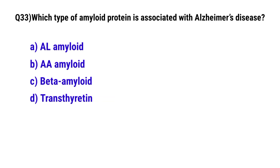Question number 33: Which type of amyloid protein is associated with Alzheimer's disease? The correct option is C: beta-amyloid.